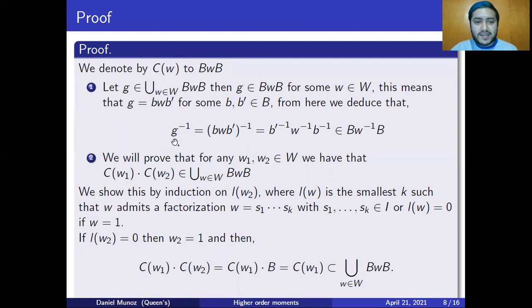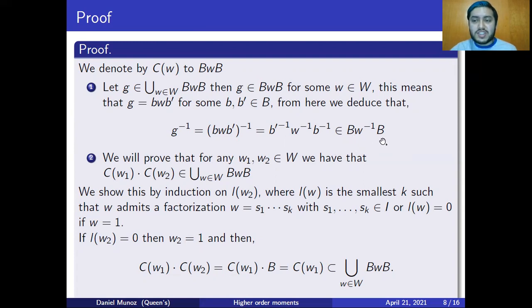From here, I can deduce that taking the inverse of g is nothing but taking the inverse of b W b', which is b' inverse, W inverse, b inverse. Because B is a group, b' inverse and b inverse are in B. And the Weyl group is also a group, so W inverse is also in the Weyl group. Therefore, g inverse is inside the double coset B W⁻¹ B, which is in the union of the double cosets. This proves that the union of the double cosets is closed under taking inverses.